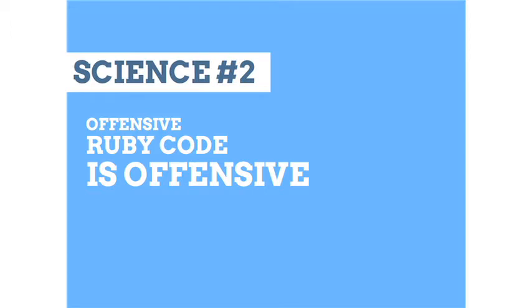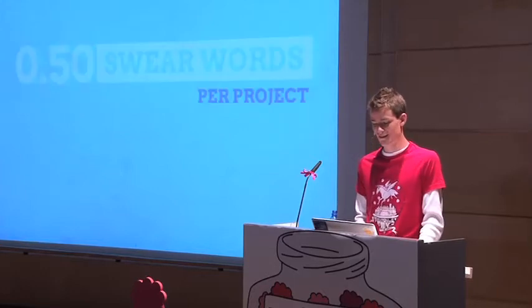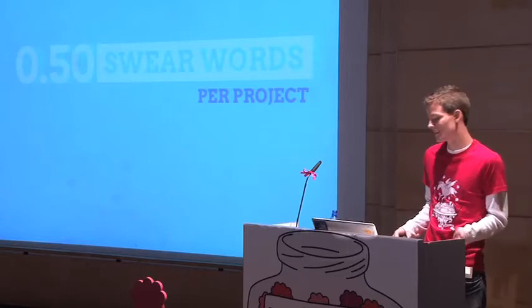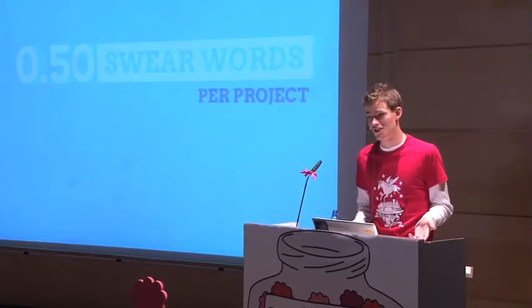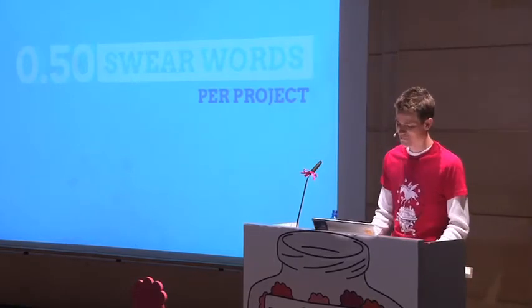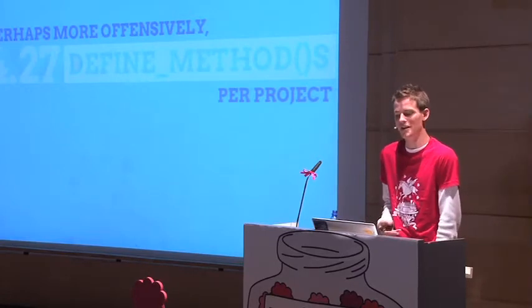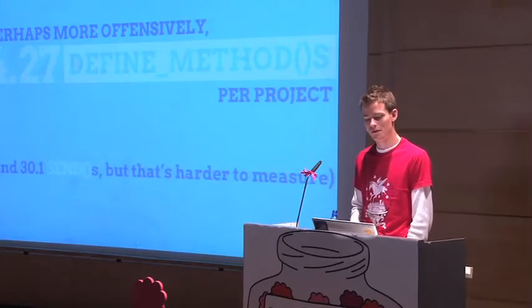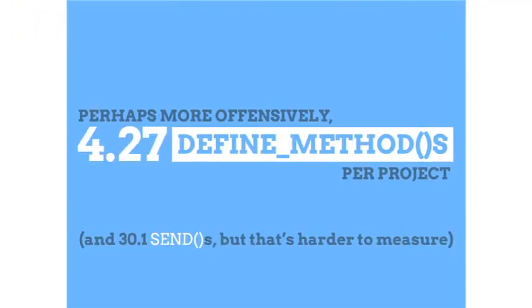Offensive Ruby code is offensive. I sometimes will like to swear — about half a swear word in each project. But probably more offensively, there's about 4.27 `define_method` calls per project. If you're really against metaprogramming, it's about 30 sends — but that's a little bit harder to measure because some people name their methods send, which is kind of silly.